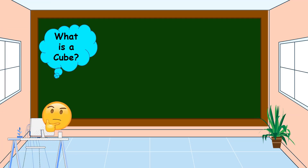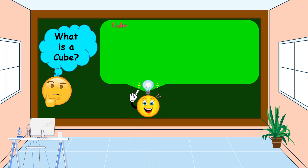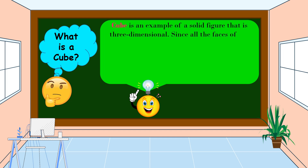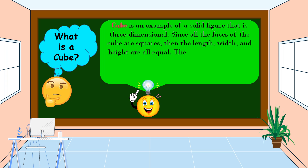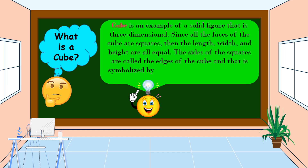What is a cube? A cube is an example of a solid figure that is three-dimensional. Since all the faces of the cube are squares, the length, width, and height are all equal. The sides of the squares are called the edges of the cube, symbolized by S.